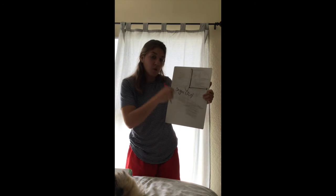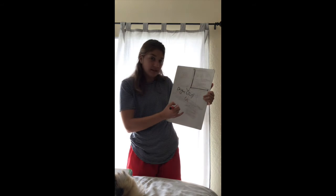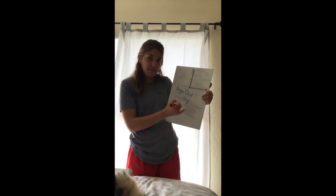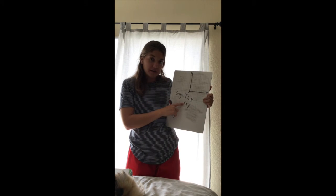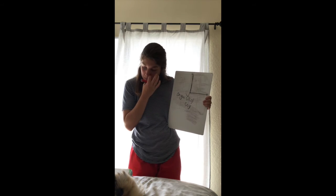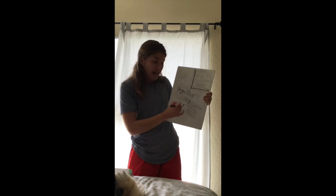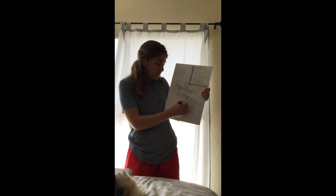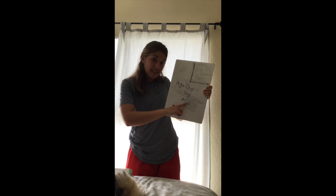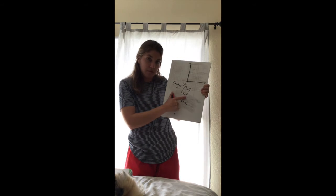Now this is an ordered pair. You always write ordered pairs as parenthesis, x comma y. You write ordered pairs with x first and then y. So if I were to go plot a point — I'm going to name this point A — with the ordered pair (1, 3): that means the 1 is the x-coordinate and the 3 is the y-coordinate, because you write ordered pairs as x comma y.